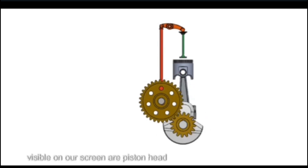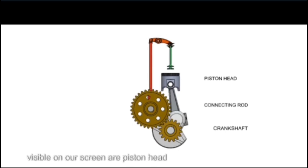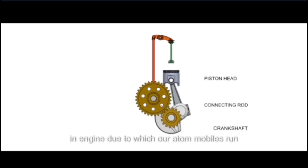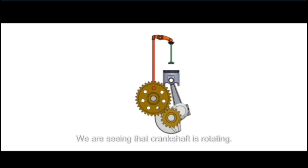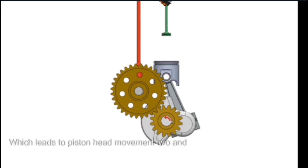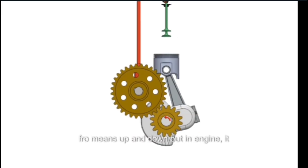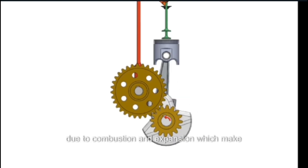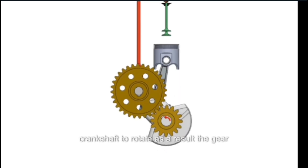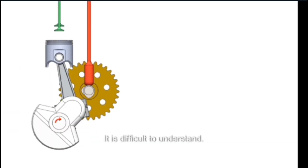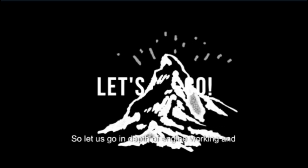As shown in the above picture, the engine is visible from inside. There are some parts in the engine visible on our screen: piston head, connecting rod, crankshaft, etc. We are going to see the motion that takes place in the engine due to which our automobiles run. The crankshaft rotating leads to piston head movement to and fro — up and down — but in the engine it works completely opposite. The piston head moves due to combustion and expansion, which makes the crankshaft rotate. As a result, the gears of our automobile rotate and make our automobile work.